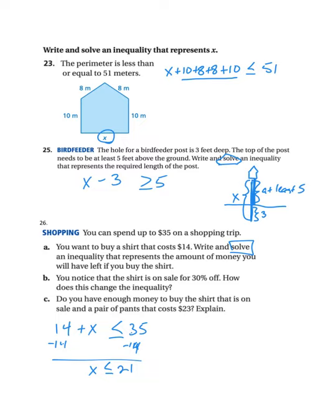Now you notice that the shirt is on sale for 30% off. How does this change the inequality? So what that changes is this amount right here. Because now the shirt doesn't cost $14. It costs 30% off of $14. So if we do 14 times 0.3 on our calculator, that's $4.20. So if we take off $4.20, now we have 9.8 plus X is less than or equal to 35. So that means we're going to have more money left over because we spent less on our shirt.